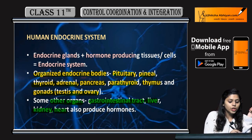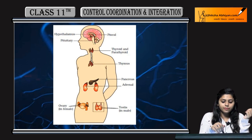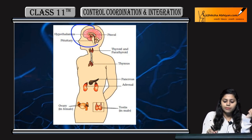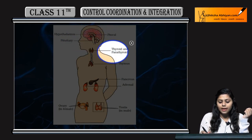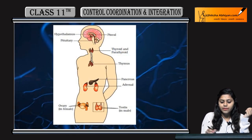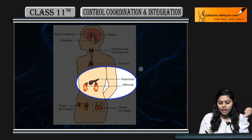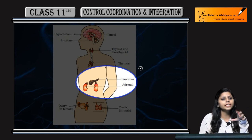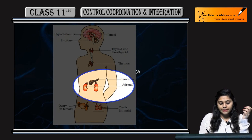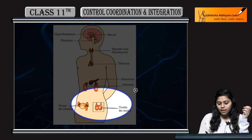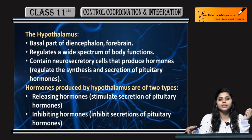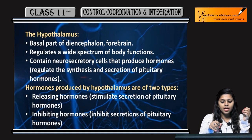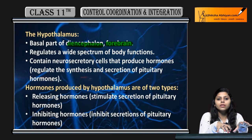They all are under the human endocrine system: the hypothalamus region, pineal gland, pituitary gland, thyroid and parathyroid, thymus, pancreas, and adrenal glands. The very first region is the hypothalamus, which is present in the forebrain and diencephalon, specifically in the basal part.